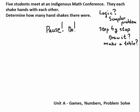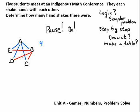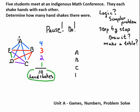Here's one way to do it — this is your Unit A: games, numbers, problem solving. Say there are five students: Albert, Bruce, Carla, Debbie, and Elijah, and they're going to each shake hands with everyone else. A shakes with B, C, D, and E — that's four handshakes so far. I'm taking my time, drawing it out step by step. Then B already shook hands with A, so B gets to shake with three people. And C is going to shake with two people because C already shook with A and B. Then D is the last one and shakes with E. So there were ten handshakes total — that's one way to do it by drawing it out.